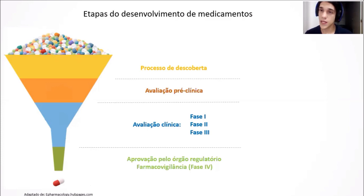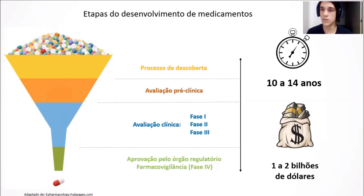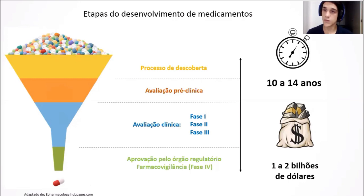Quero justificar por que disse que essa imagem explica muito da discrepância entre o tamanho do investimento, o número de candidatos e o número de aprovações. Essas etapas levam 10 a 14 anos para acontecer — esse é o tempo médio da descoberta de um medicamento até a entrada dele no mercado. E o custo de toda essa operação varia entre 1 e 2 bilhões de dólares, porque esse custo não está atribuído simplesmente ao desenvolvimento do composto que deu certo, mas de todos os outros compostos que falharam no meio do caminho. Nos próximos vídeos falaremos sobre o processo de descoberta de fármacos e a avaliação pré-clínica, com enfoque nos modelos de eficácia e na toxicidade.